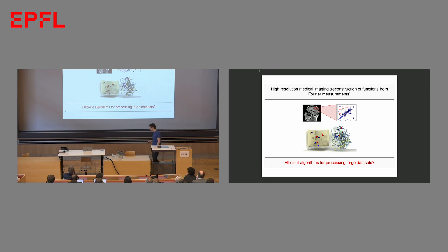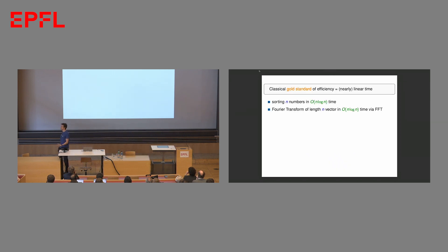So we would like to design very efficient algorithms for processing large data sets. But perhaps we have them already. Let's see what classical theory of algorithms tells us about efficiency. The classical gold standard of efficiency is the notion of nearly linear time computation. For example, we sort N numbers in N log N time. This is truly efficient. We never hesitate to sort. Another classical example is the Fourier transform problem. We can compute the FFT in N log N time, and this is truly efficient.